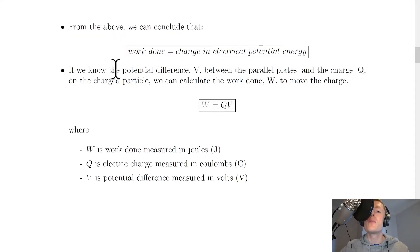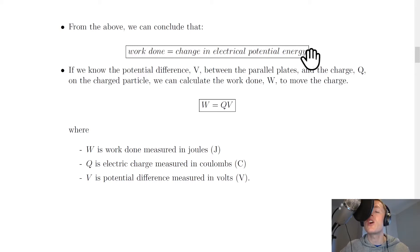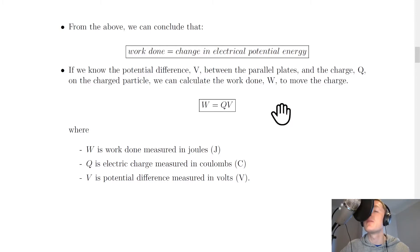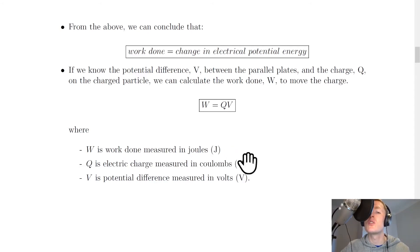From the above, we can conclude that work done is equal to the change in electrical potential energy. Work is done on the charge to move it against the electric field lines, and it stores that electrical potential energy. If we know the potential difference V between the parallel plates and the charge Q on the charged particle, we can calculate the work done W to move the charge. This gives us the equation W equals QV, where W is work done in joules, Q is electric charge in coulombs, and V is potential difference in volts.